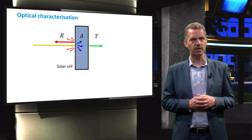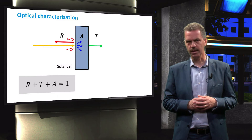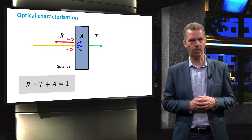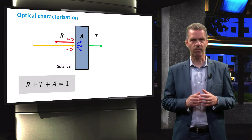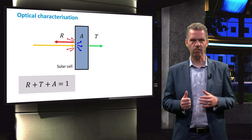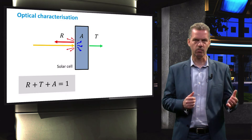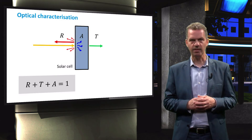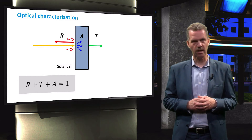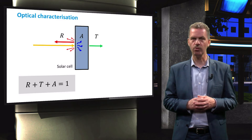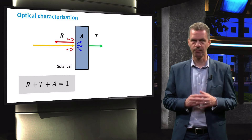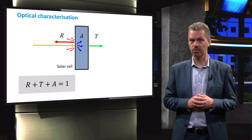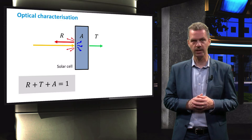The relation between these three quantities is described by this simple equation, namely that the sum of the total reflection, the transmission and the absorption as a percentage of the incoming light intensity should be equal to 1. This relation expresses in fact the conservation of energy.